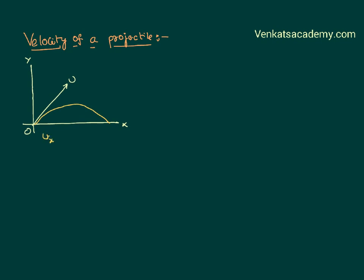Velocity can be resolved into components ux along x axis, initial velocity uy along y axis. We know that ux is equal to, because it is a horizontal component, u cos theta. uy is equal to u sin theta.